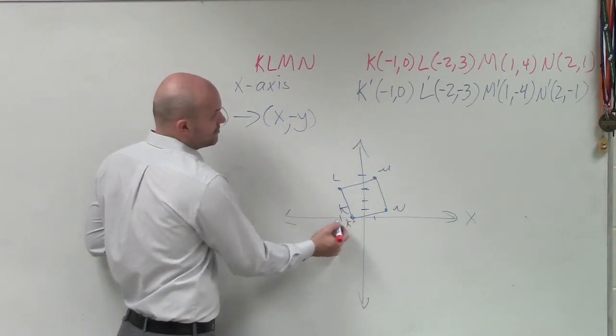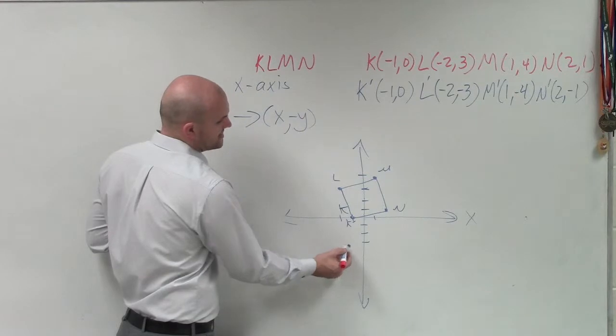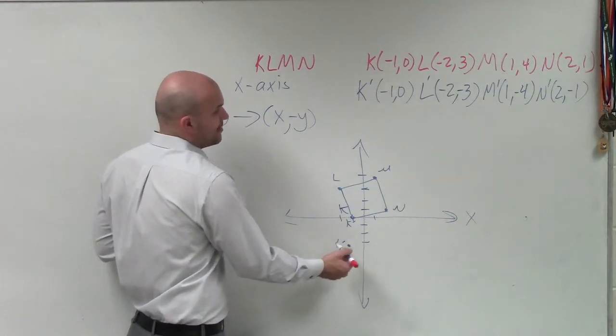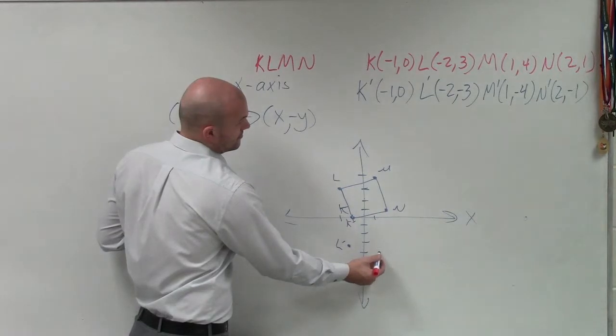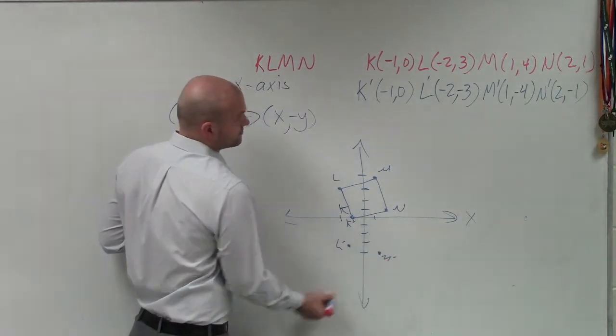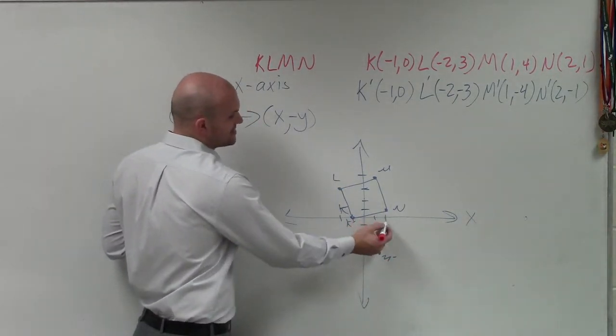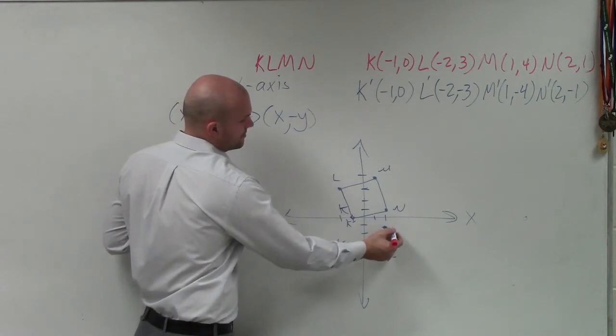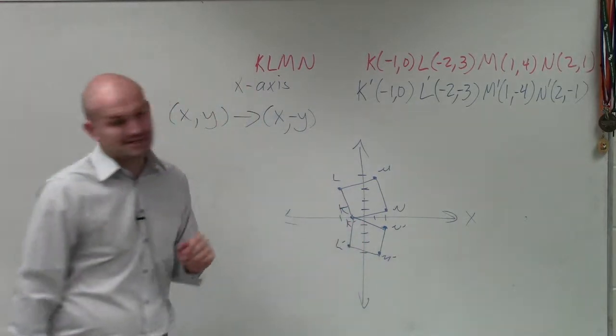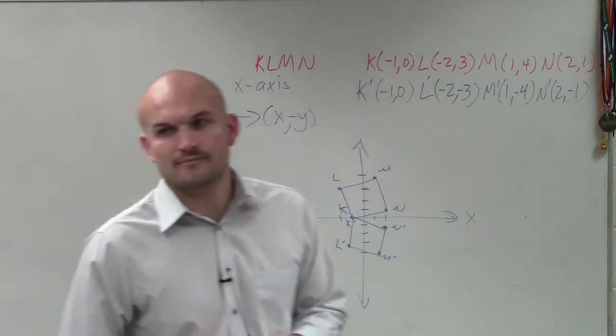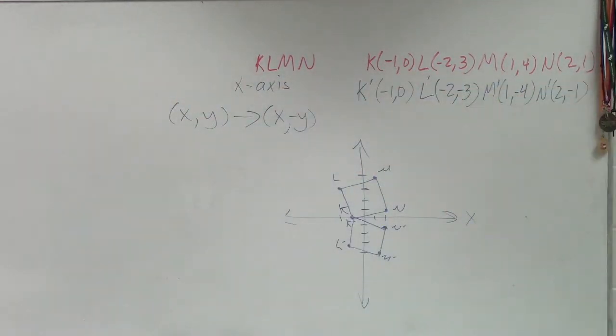Negative 2, negative 3, 1, 2, 3. That's now L prime. M prime is 1, negative 4. And N prime is positive 2, negative 1. And therefore, you guys can see your transformed figure. Keith, is there a problem behind you? No, there's no problem.